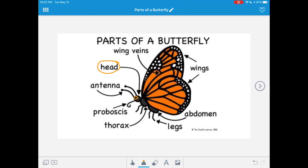The head is where the butterfly's eyes are, as well as their antenna. The antennae help the butterfly be able to sense the world through smell. The antennae also help the butterfly to balance.